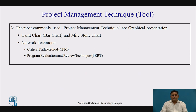The project management techniques are a graphical presentation. These include the Gantt chart, also known as a bar chart, and the milestone chart. The second category is network techniques, which include CPM (Critical Path Method) and PERT (Program Evaluation Review Technique).